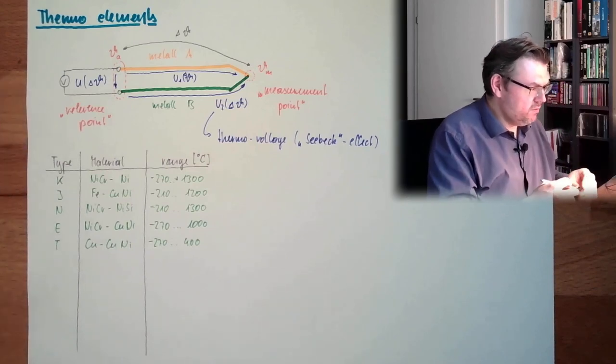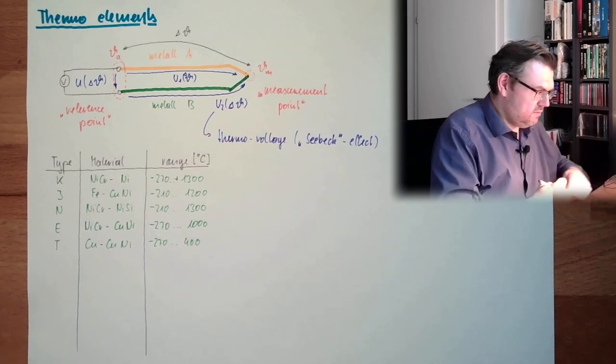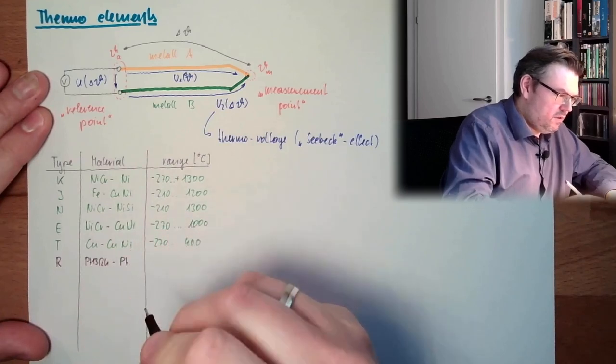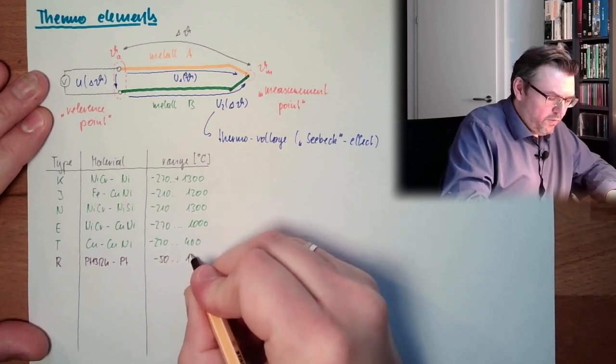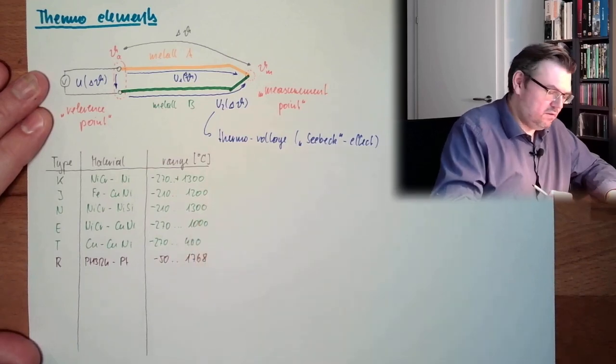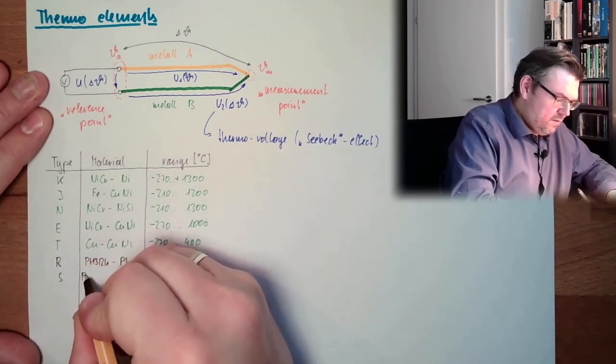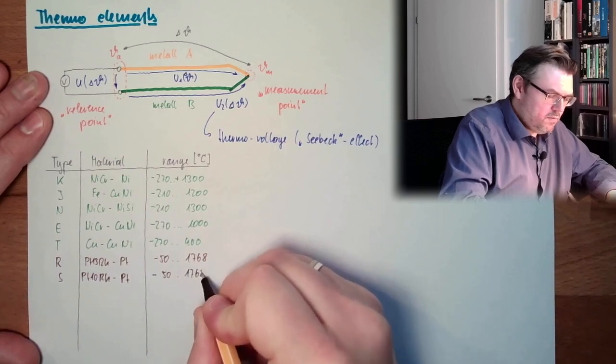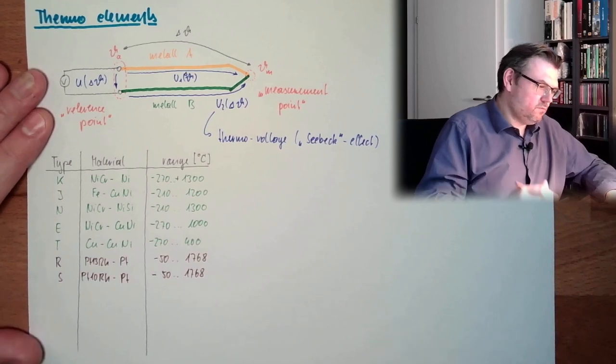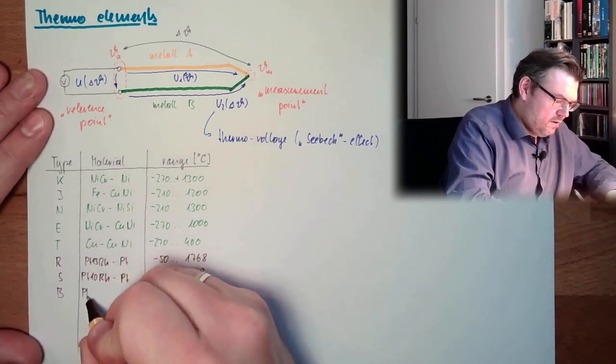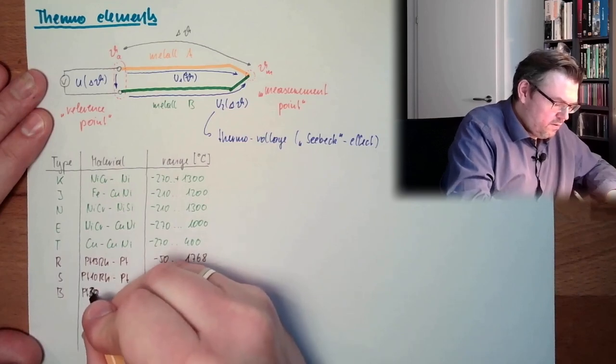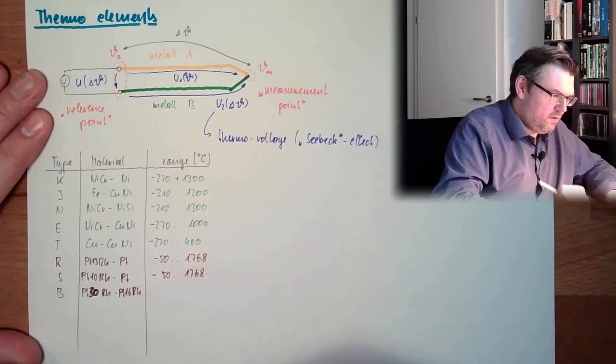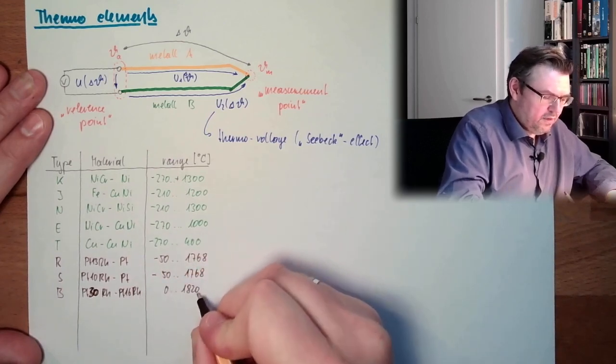And also very often used are these platinum things. Platinum rhodium R, platinum 13 rhodium, platinum. This goes from minus 50 to 1768, so much higher than the others. Also S, platinum 10 rhodium, platinum. Then there would be type B, platinum 30 rhodium, platinum 16 rhodium. This goes from 0 to 1820.